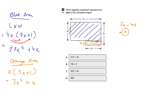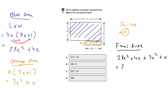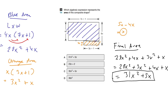Now we've got both sub-areas. All that remains is one single step — adding the two areas together. The final area is 28x squared plus 4x plus 3x squared plus x. Putting like terms together: 28x squared plus 3x squared gives 31x squared, and 4x plus x gives 5x. So the final area is 31x squared plus 5x. This matches answer A, and that's how you solve this one.